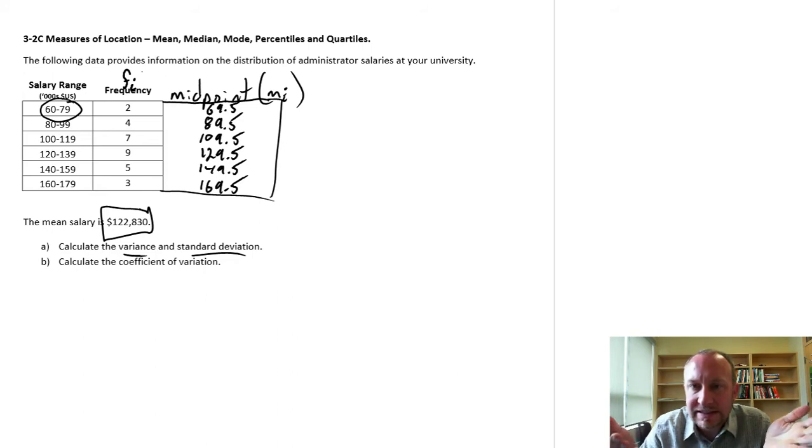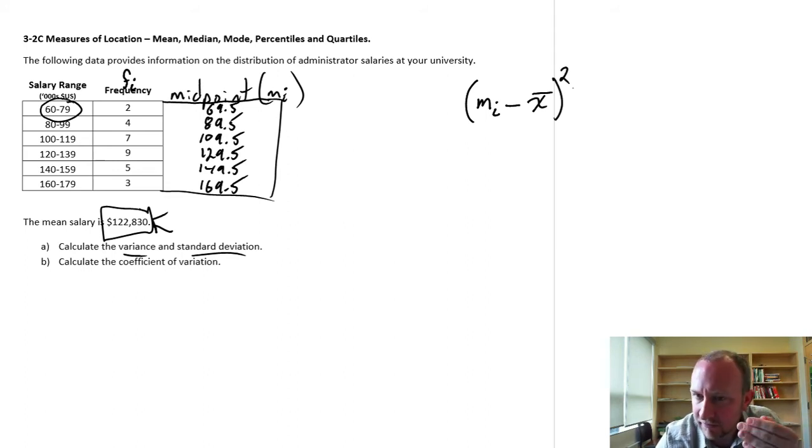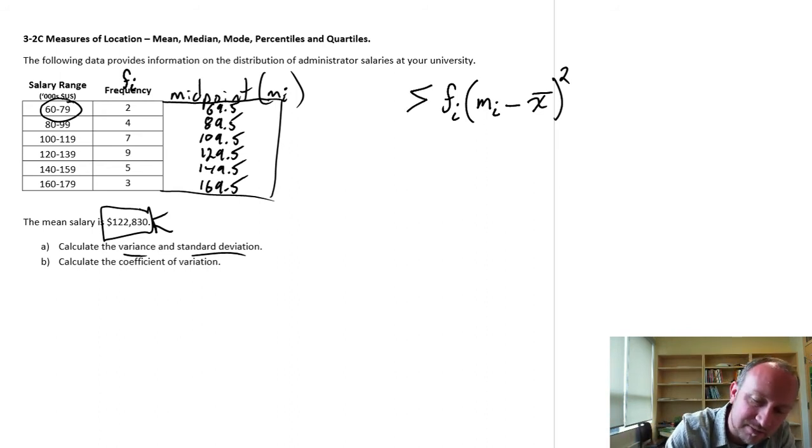So how do we get our variance without having the specific data? Well, the procedure is similar to what we've done, only now, because we don't have the exact data points, we work with the midpoint, so the midpoint of each class, minus the mean, which we've calculated, and we have that down here, 122.83. We square that difference, so this is similar to variances that we've calculated before, except that we're using the midpoint. And we weight it, now this is one thing that is different, we're going to weight it by the frequency, so the number of observations within that class. And then we add all of these together across k classes. So how many classes do we have? I have 1, 2, 3, 4, 5, 6. So I have k equals 6 classes.